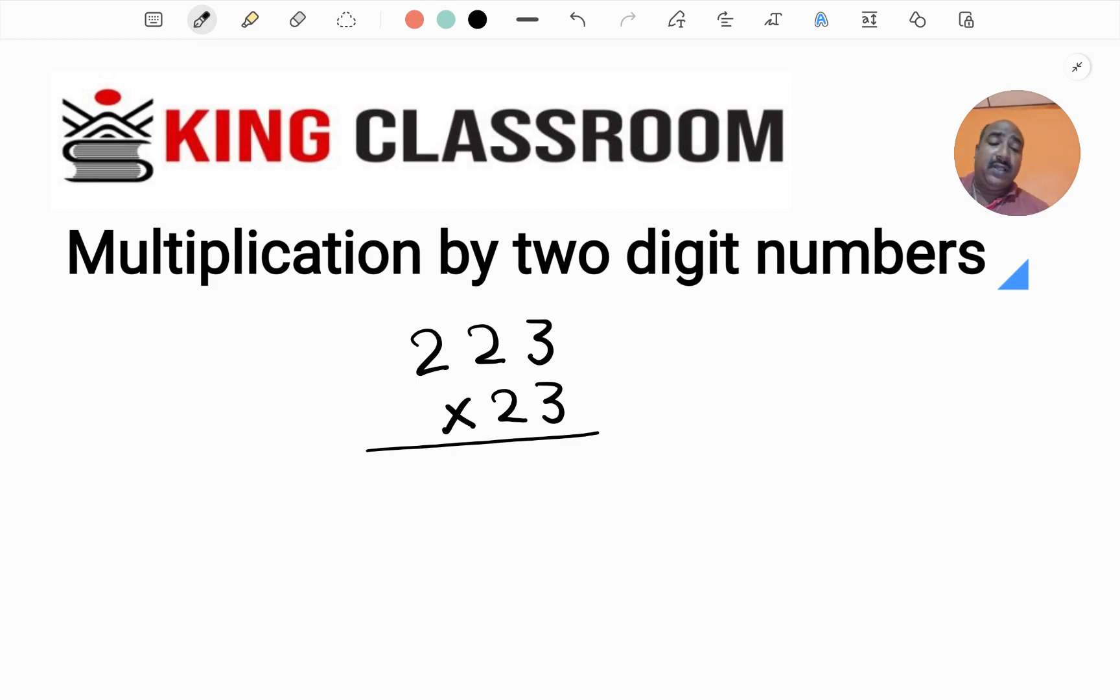First, we have to identify place values in 223. The 3 is in 1's place, 2 is in 10's place, and 2 is in 100's place. We will multiply 23 with these numbers. First, multiply the 3 from 23 (which is in 1's place) with 223. Then multiply the 2 from 10's place in 23 with 223. That is the common process of multiplication.